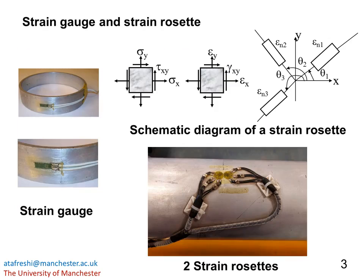We cannot measure the stresses directly. However, we can measure the strains using the strain gauges and then use the stress-strain relations to calculate the stresses. The aluminium tube has a thin-walled section. When the tube is subject to a combined loading condition, at any point on its surface, there are three independent stress components — sigma x, sigma y, and tau xy — and three independent strain components — epsilon x, epsilon y, and gamma xy.